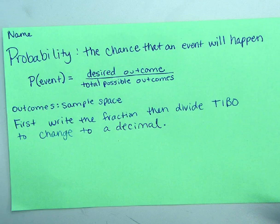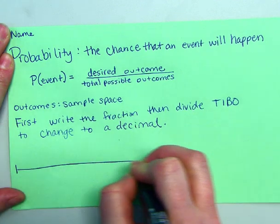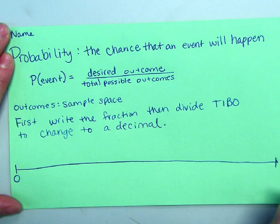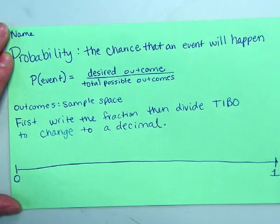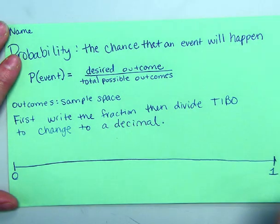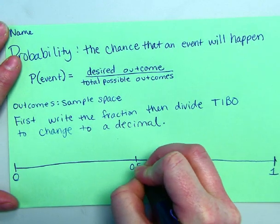We can also write it as a percent, but we are going to look at it as a decimal. So we are going to write a number line. This is the last thing on this, the number line. But our number line is just going to go from 0 to 1. So in between would be 0.5.